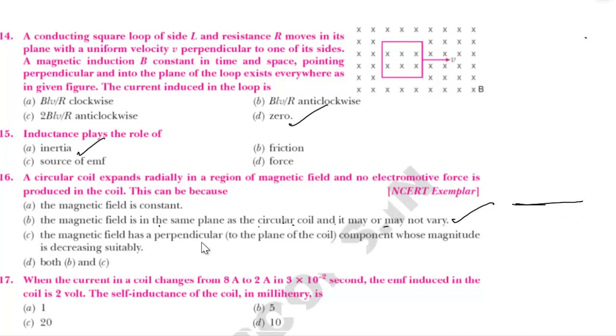Also, the magnetic field has a perpendicular component whose magnitude is decreasing suitably. So both options B and C are correct.